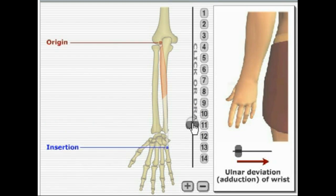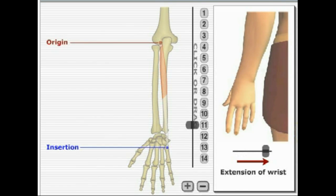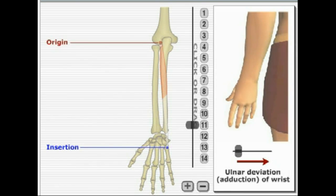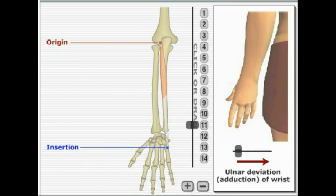Next, we have extensor carpi ulnaris. It originates on the lateral epicondyle of the humerus and inserts into metacarpal number five. The actions it performs are extension of the wrist and adduction of the wrist.